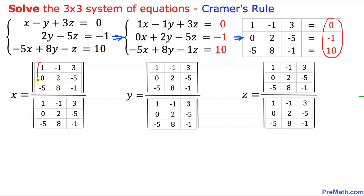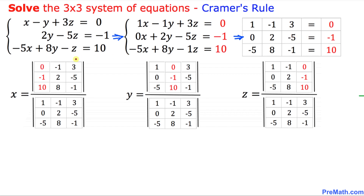For x, those values go into the very first column on the left-hand side. As we go along, it shifts to the second column for y, and for z, it goes into the third column. We have nicely filled out the first column for x, the second column for y, and the third column for z.